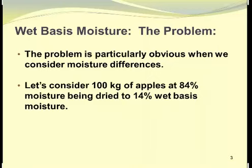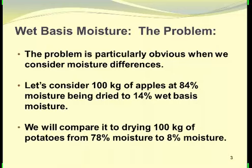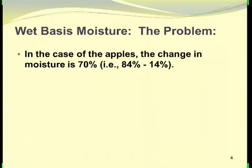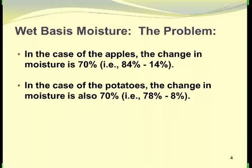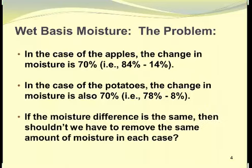Let's look at 100 kilograms of apples at 84% moisture being dried to a final moisture content of 14% on a wet basis, and compare it to drying 100 kilograms of potatoes from 78% moisture to a final moisture of 8%. In the case of the apples, the change in moisture is 70% — that is, 84% initial minus 14% final. In the case of the potatoes, the change is also 70%: 78% minus 8%. If the moisture difference is the same, shouldn't we have to remove the same amount of moisture in each case?